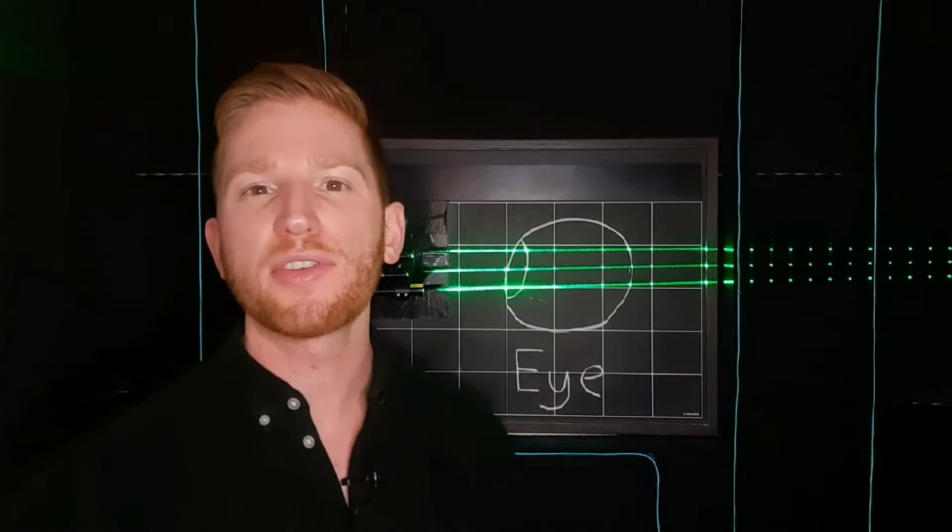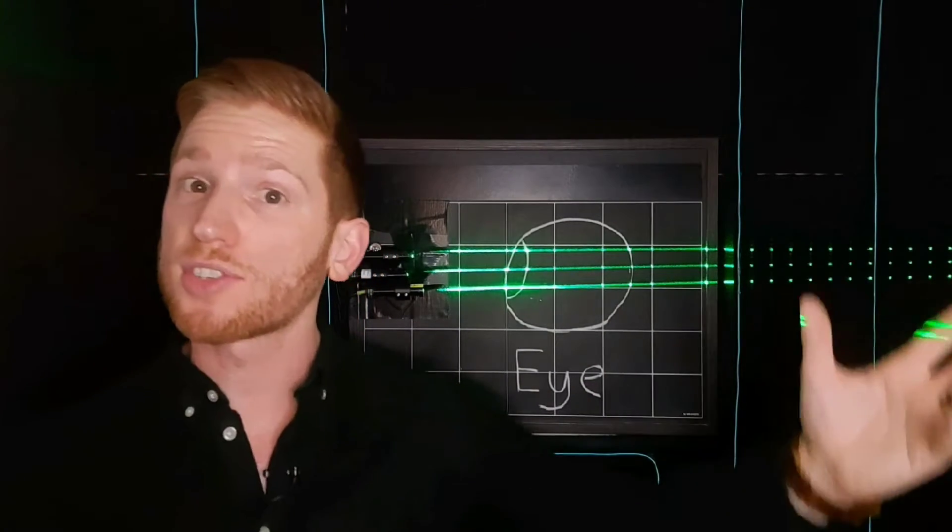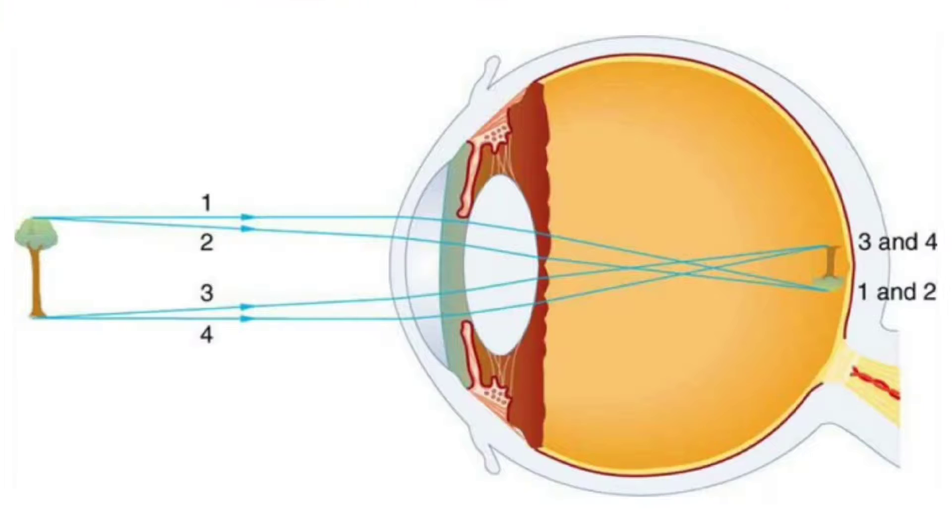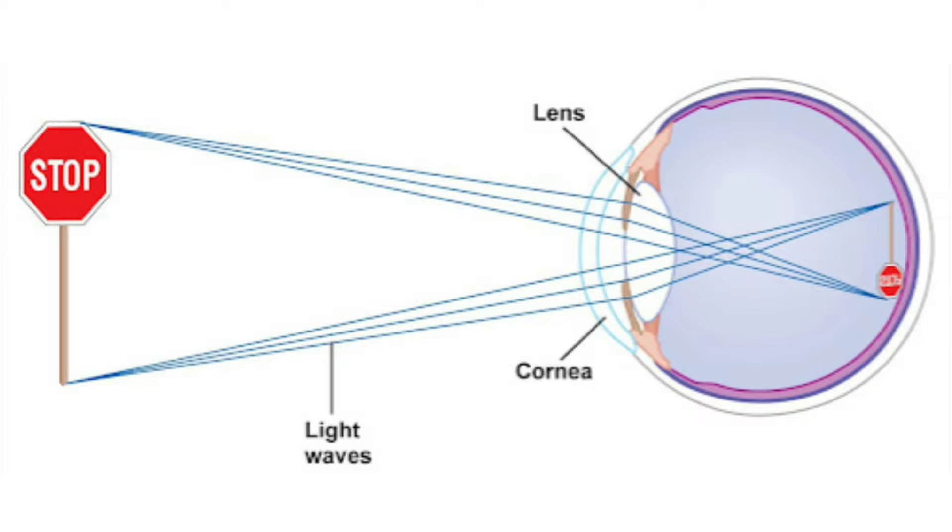In reality though, that's just how your eyes focus something that's far away, like a star. For things closer up to you, your eye forms this upside down image on the back of your eye, like shown in this diagram.